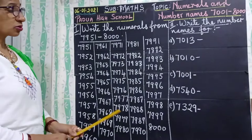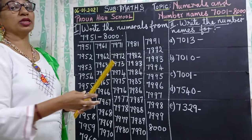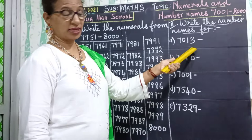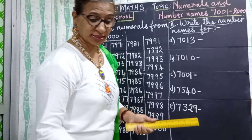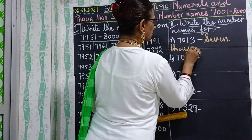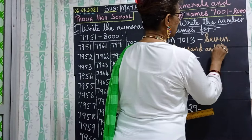Now children, here you have to write the number names. So if you know how to read these properly, you will be able to write the spellings. I am sure you know the spellings also by now, children. So when you read this number, it will be 7013 — 7000 and 13, there is no 100. So you will write seven thousand and thirteen. I hope you know the spelling of 13: T-H-I-R-T-E-E-N.